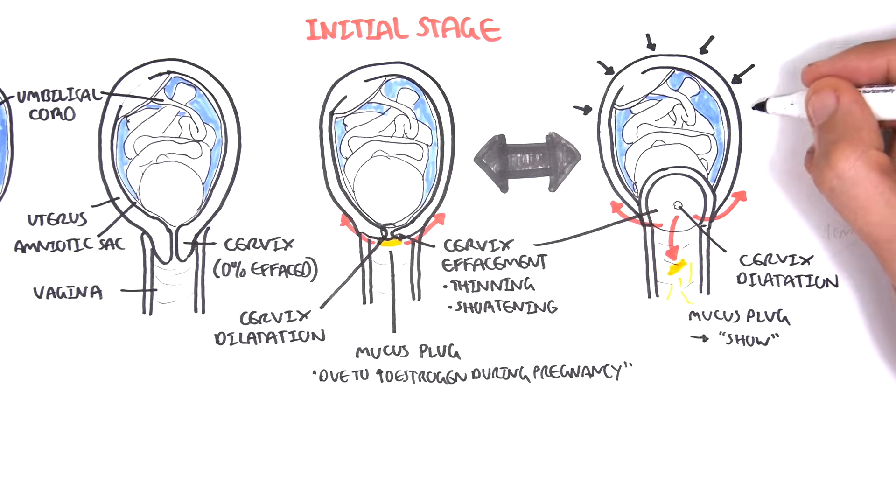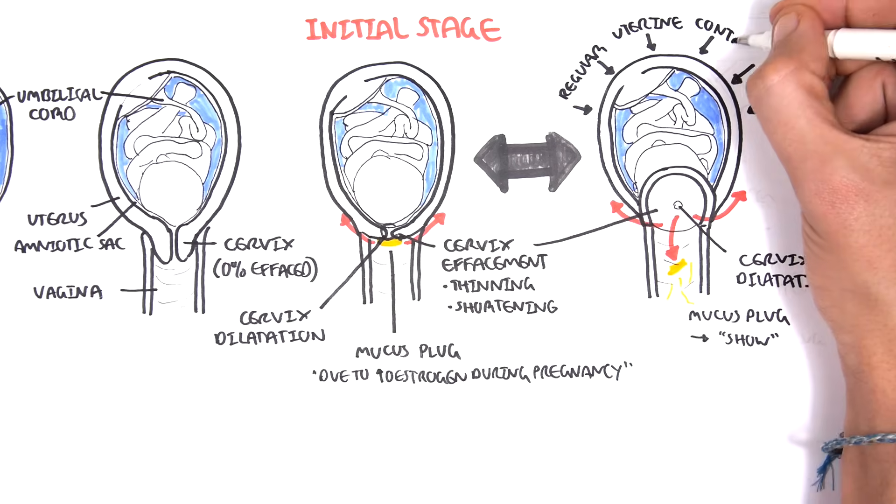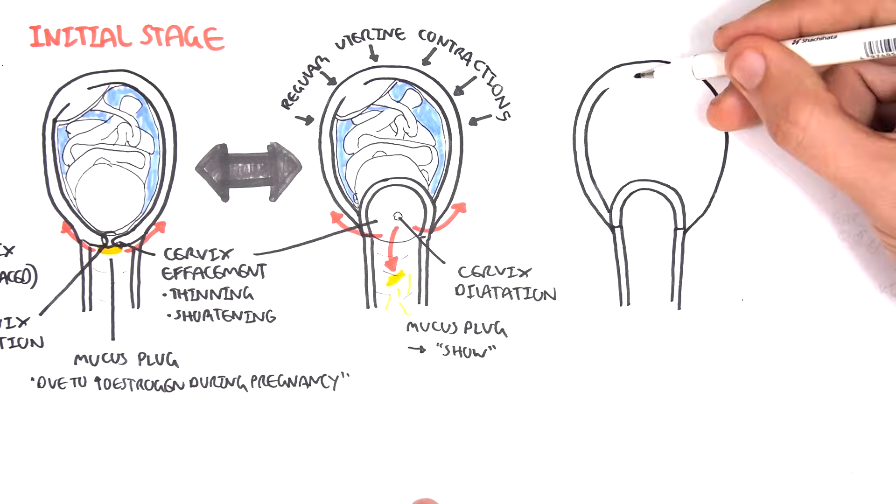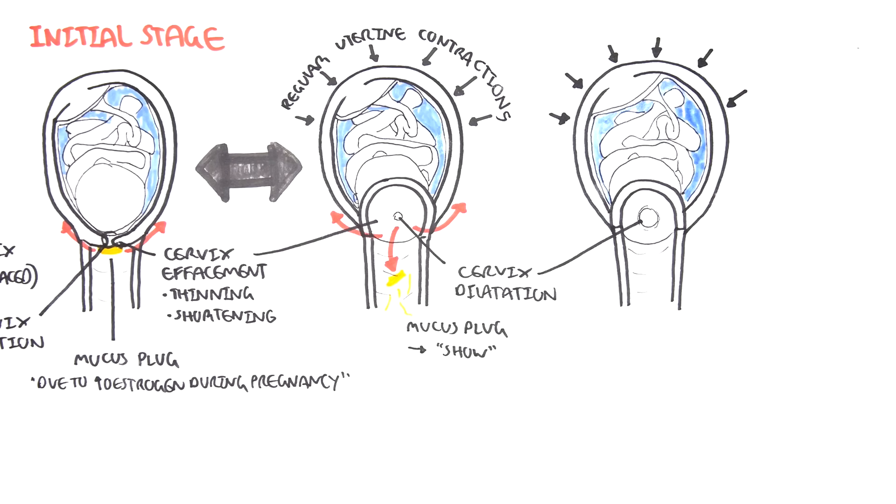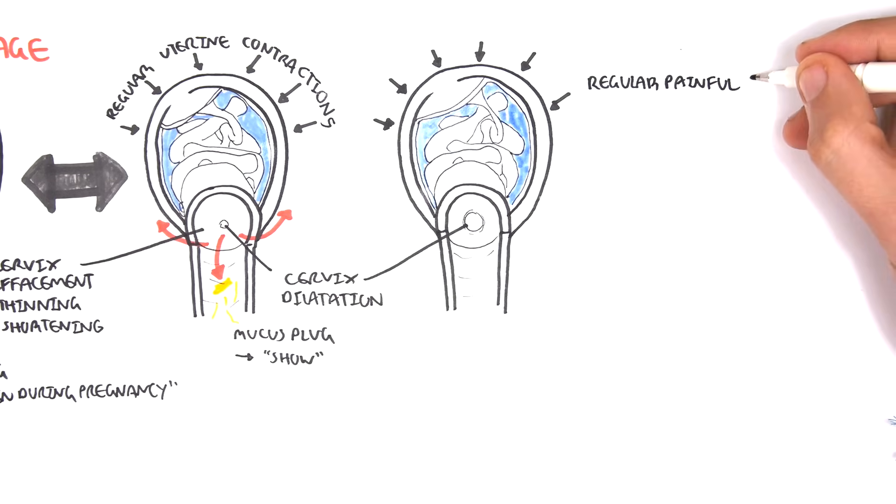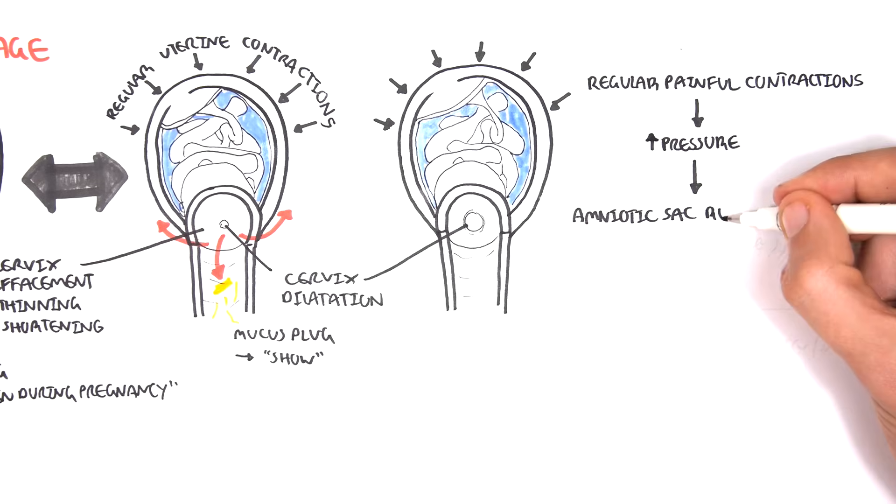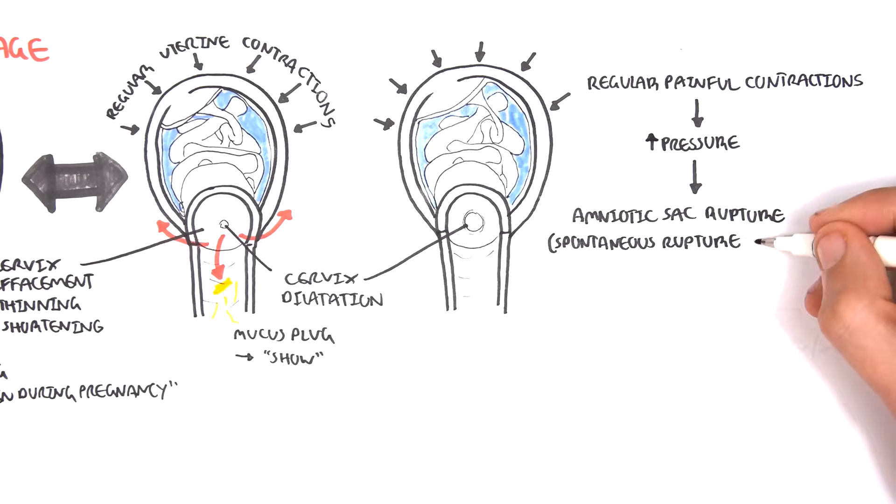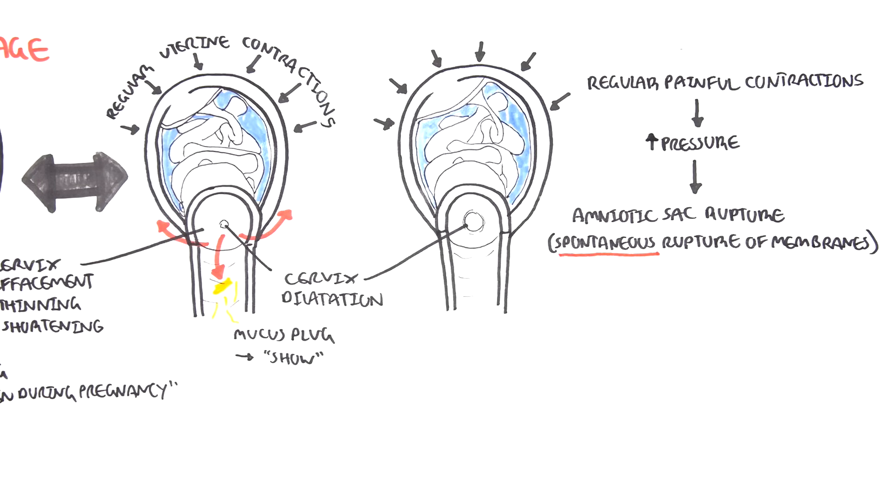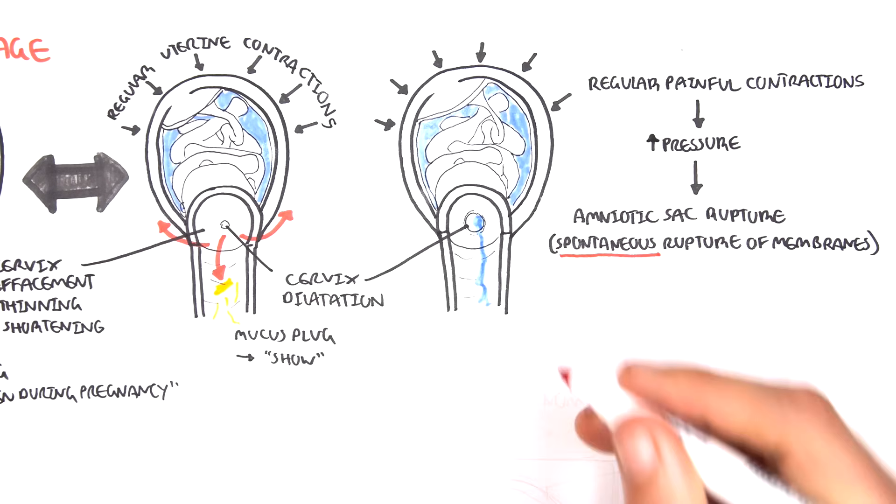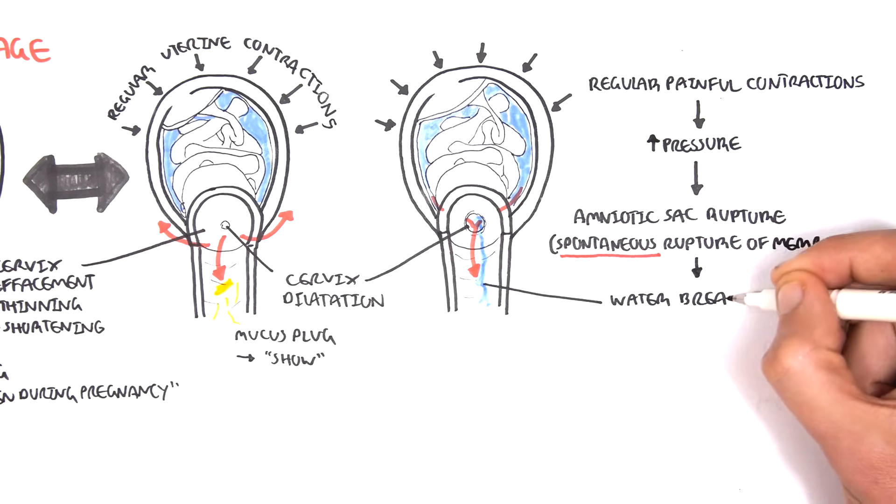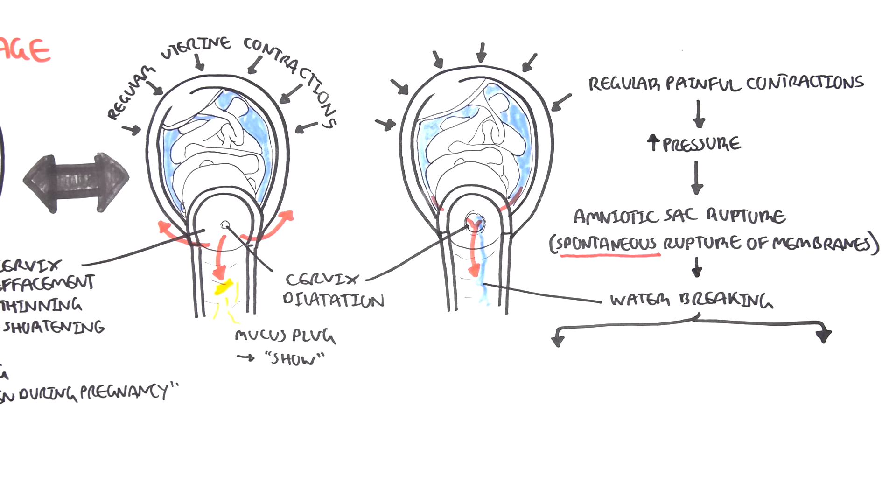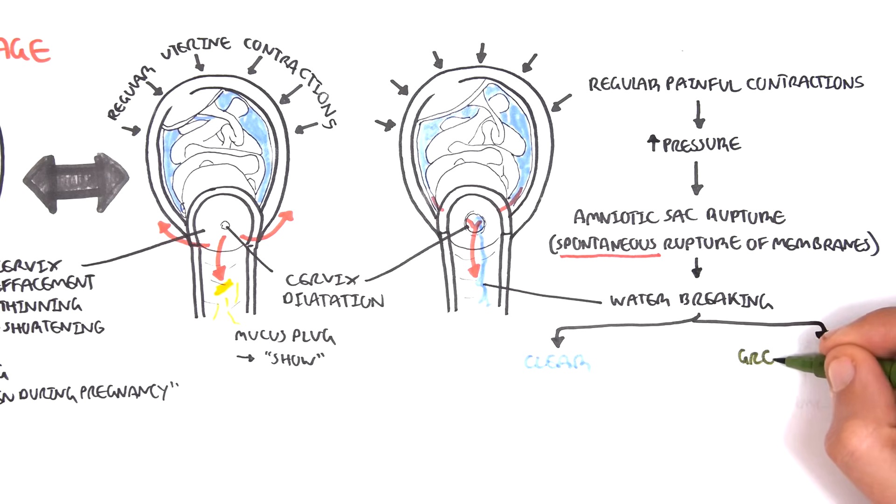Then when labor begins this is where you start getting the regular uterine contractions which are painful. With these uterine contractions the cervix becomes further dilated. With regular painful contractions there is actually an increase in intrauterine pressure. This increase in intrauterine pressure will result in rupturing of the amniotic sac within the uterus. And this is what is called spontaneous rupture of membranes, or water breaking. The women often say my water broke. When the water breaks what they are actually talking about is the amniotic fluid which is within the amniotic sac coming out. It is important to know that the water or the fluid in this instance is usually clear which is normal.